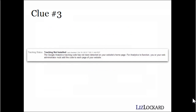The third clue is kind of the most obvious. You head to your admin section and check on the tracking code part of your site, the tracking status, and you get this exact error here — tracking not installed. If Google Analytics can't detect the code on your site, then something's not set up properly.